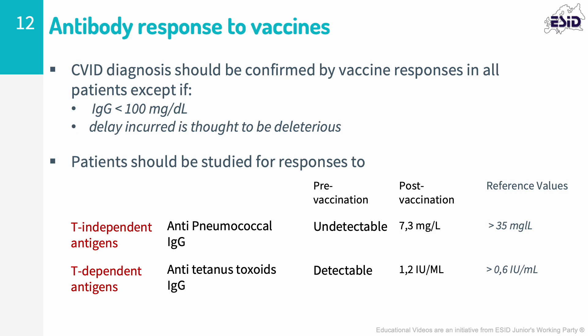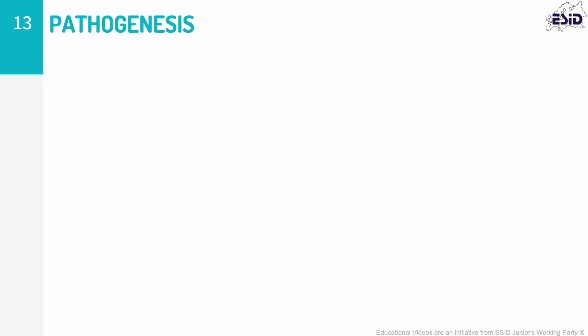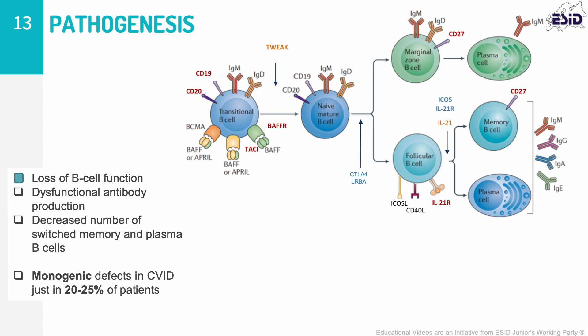Genetic studies are desirable in these patients, but are not required to confirm the diagnosis. The immune defect common to most CVID patients is a loss of memory or effector function of B-cells, which leads to dysfunctional antibody production. The defect can be intrinsic to B-cells or due to insufficient help from other cells. Most CVID cases are thought to be sporadic; however, familial cases have been reported and are mainly associated with an autosomal dominant pattern of inheritance, often with variable penetrance.